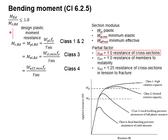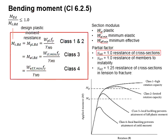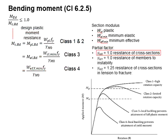The moment resistance of the member is dependent on their classification. The design plastic moment resistance may be used for Class 1 and Class 2, as these two classes have exceeded the plastic moment resistance.